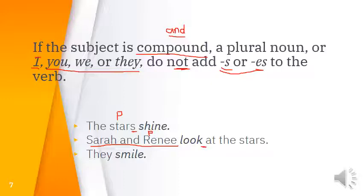A helpful tip: you can write S above the subject if it's singular — then add S to the verb. Write P above the subject if it's plural — then don't add S. This makes it easier to remember when to add the S.